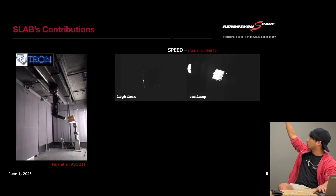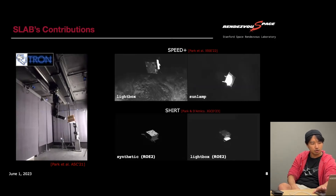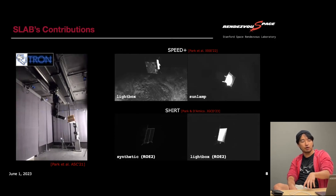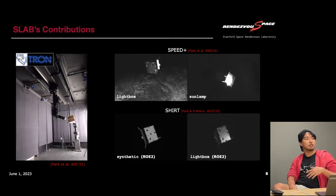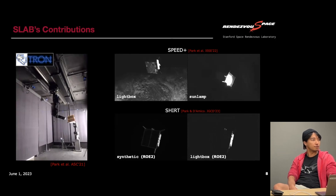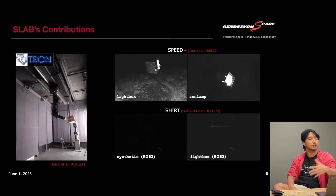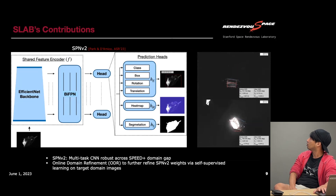The other dataset is SHIRT — Satellite Hardware In the Loop Rendezvous Trajectory — which consists of two rendezvous trajectories realized in both synthetic and real-world TRON settings. This can be used to test a machine learning-included Kalman filter or navigation filter and see how the filter as a whole adapts to the domain gap between synthetic images used for training and the lightbox images from TRON.